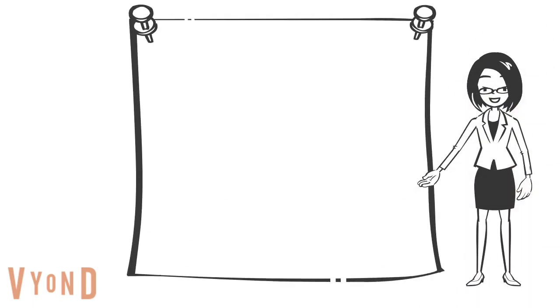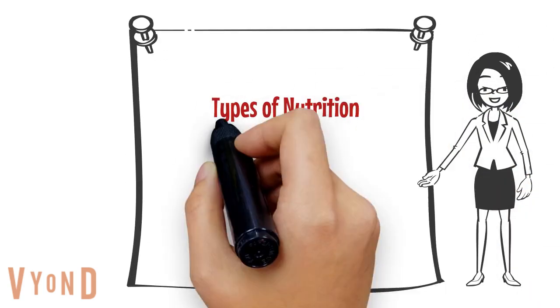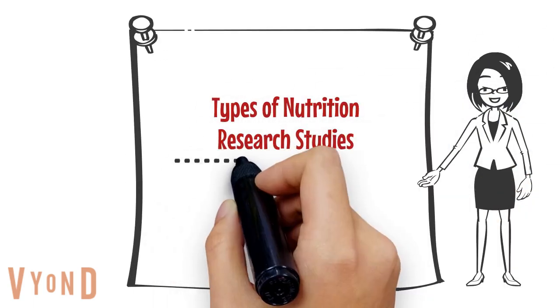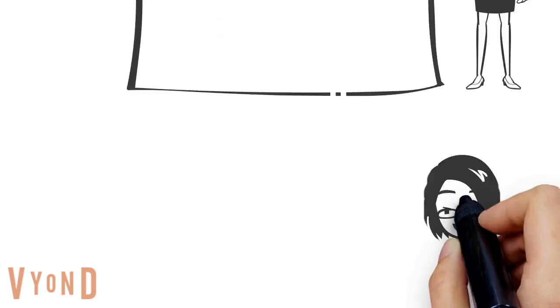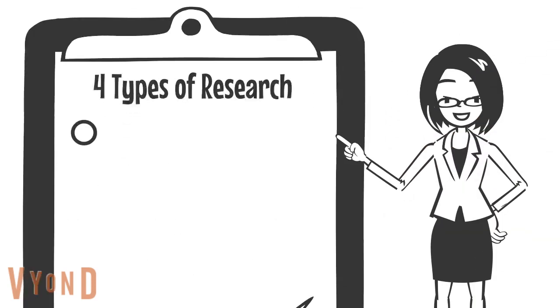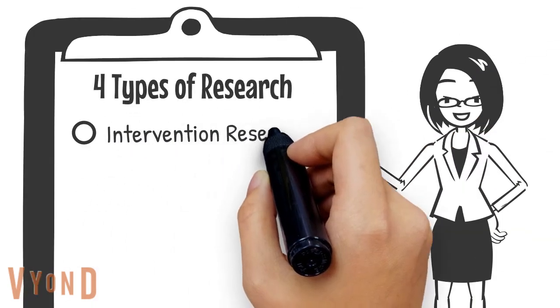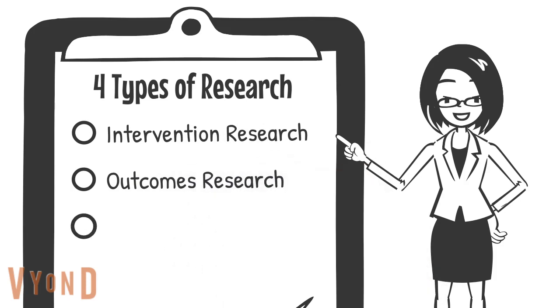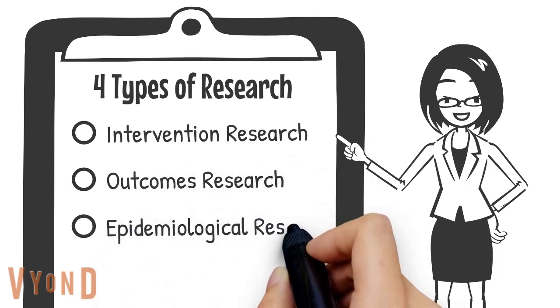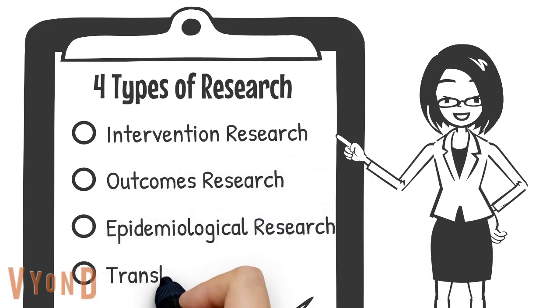In this short video, we will talk about the different types of nutrition research studies. There are four major types of research in nutrition: intervention research, outcomes research, epidemiological research, and translational research.